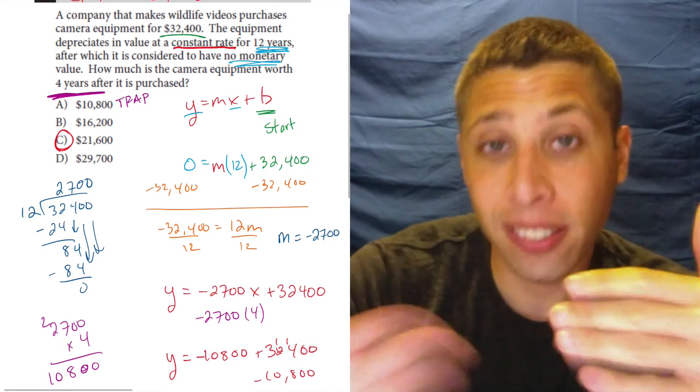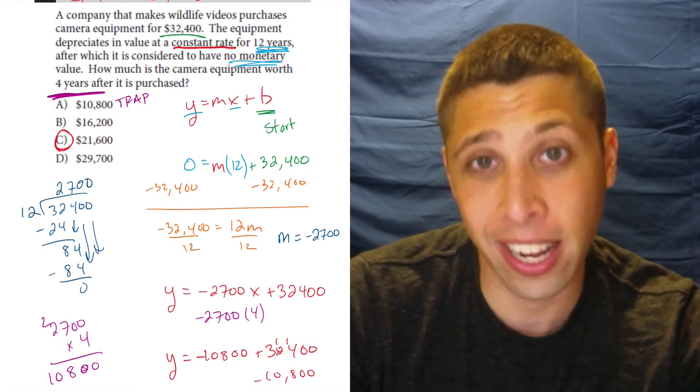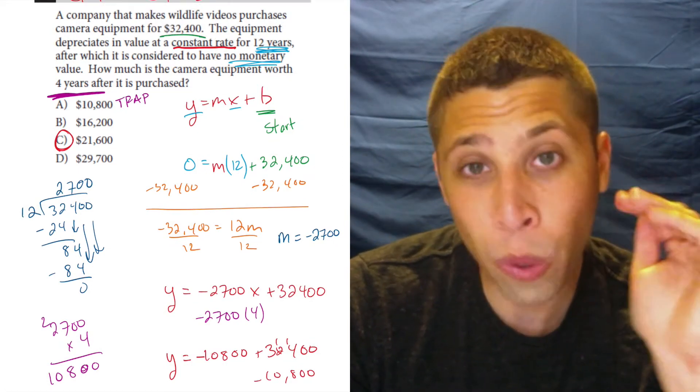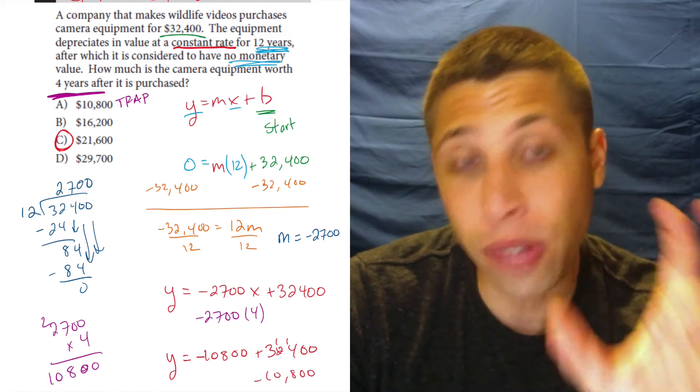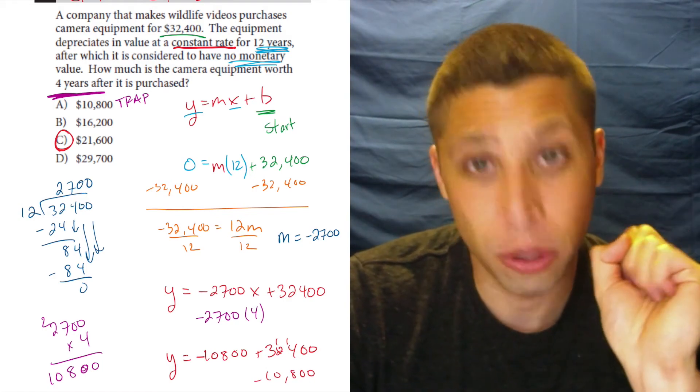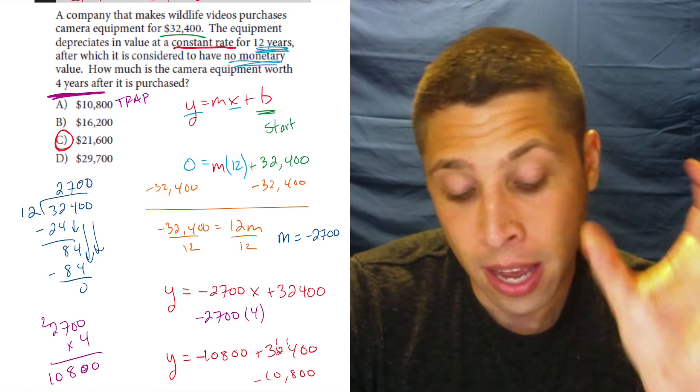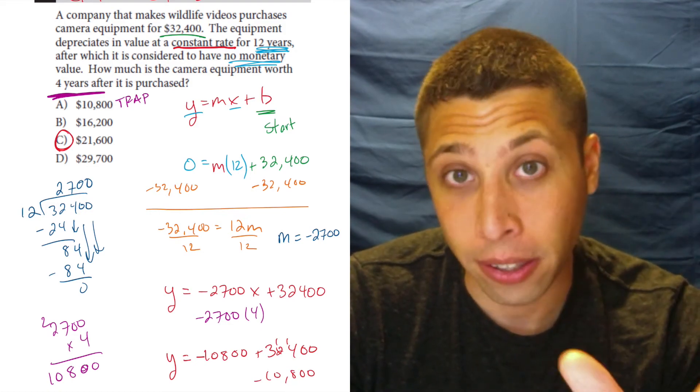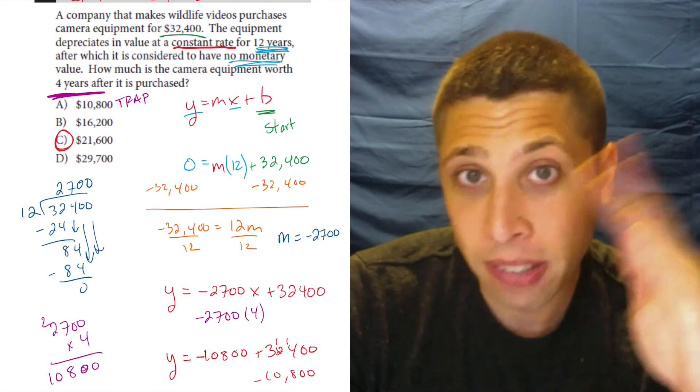But for the SAT in general, when we see phrases like constant rate, we've got to latch onto that and use that as a clue to start thinking about lines. And yeah, the numbers got messy here.